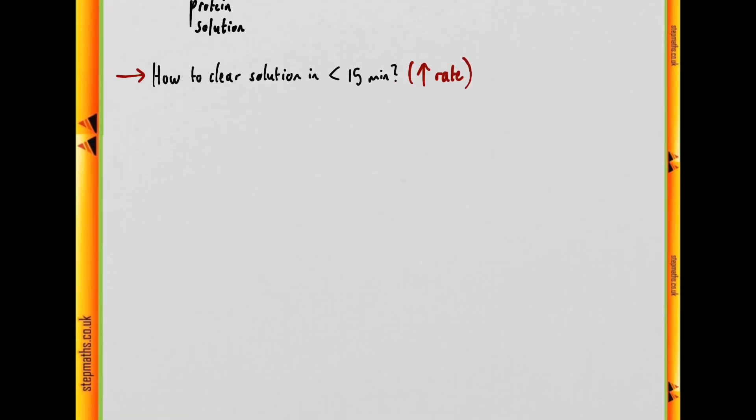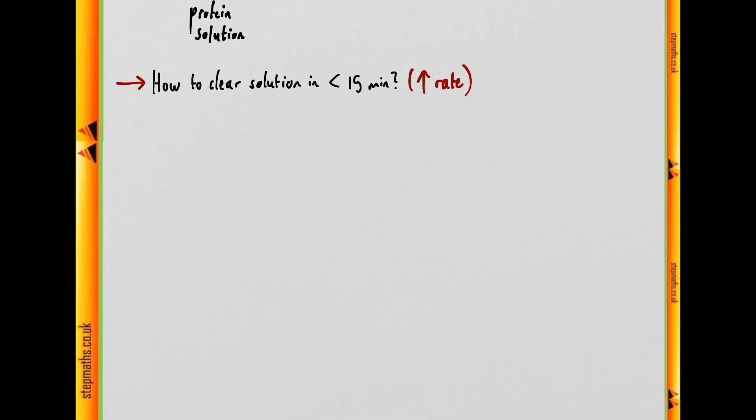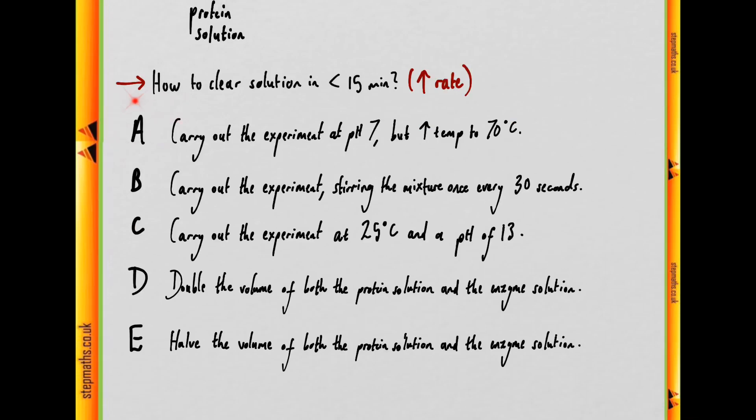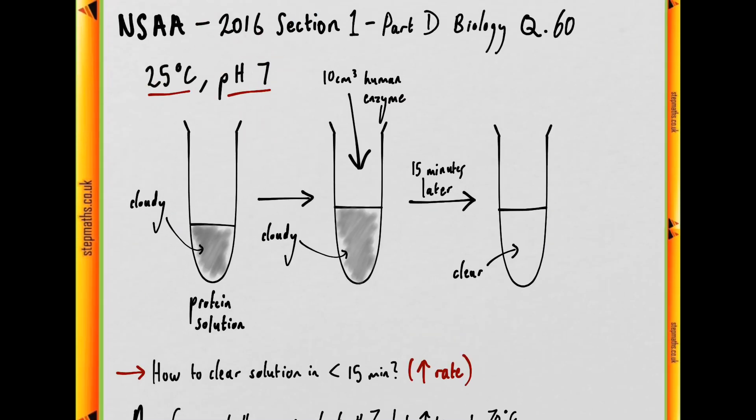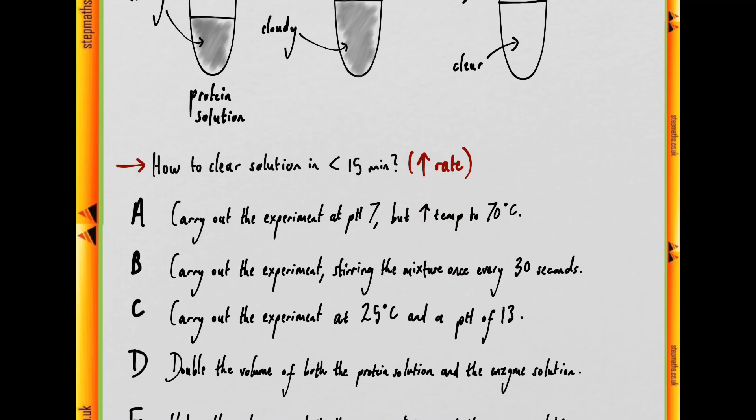Well, we have five potential options and we have to assess which is correct. A through E, we can start with A. To carry out the experiment at pH 7, the same pH as we started, but increase the temperature to 70 degrees Celsius.